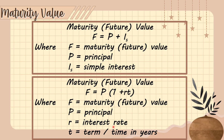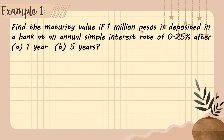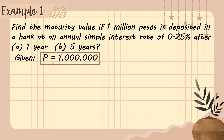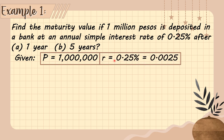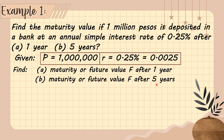Now let's have example number one. Find the maturity value if P1,000,000 is deposited in a bank at an annual simple interest rate of 0.25% after A, one year, and B, five years. The given are: principal P1,000,000, rate of 0.25% or 0.0025 in decimal form, and we find the maturity value after one year and after five years.